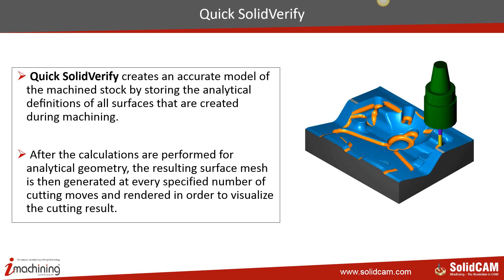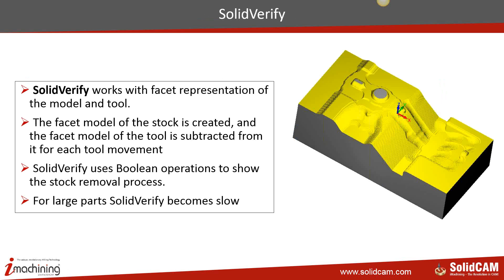Solid Verify works exactly opposite to Quick Solid Verify. It works like a solid modeling engine, using a faceted representation of both the model and the tool. It creates a faceted model of the stock and a faceted model of the tool, and performs Boolean operations at every point on the toolpath. Initially these Boolean operations are fast — a simple cube with a few triangles and a cylinder. But as toolpaths accumulate through roughing, semi-finishing, and finishing, the faceted model becomes very complex and Boolean operations start slowing down.